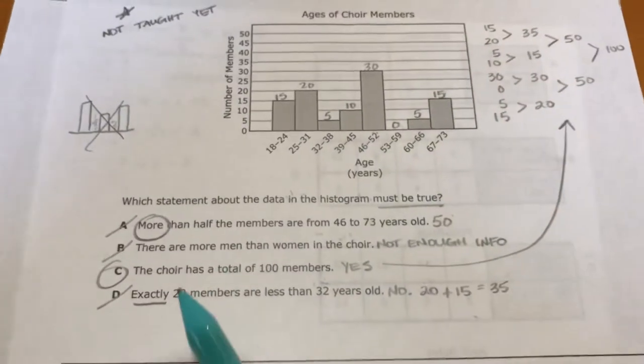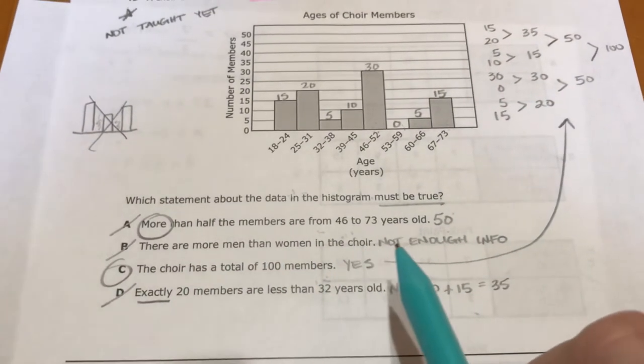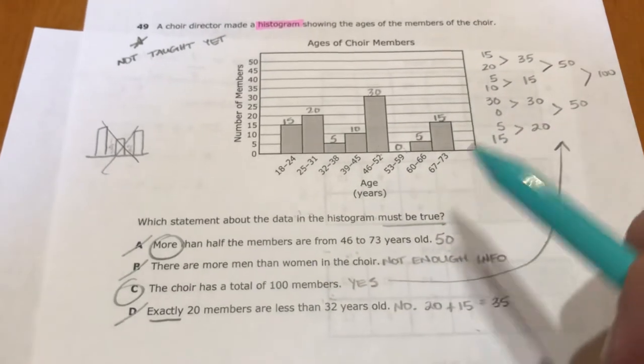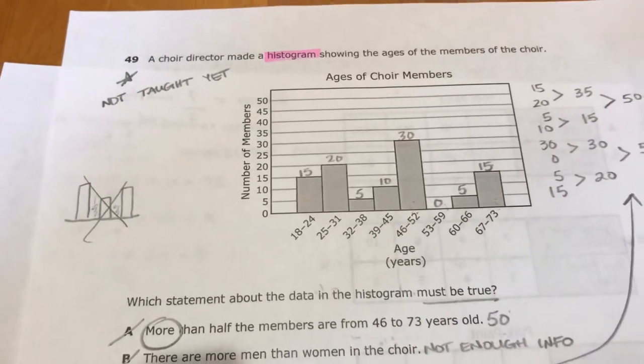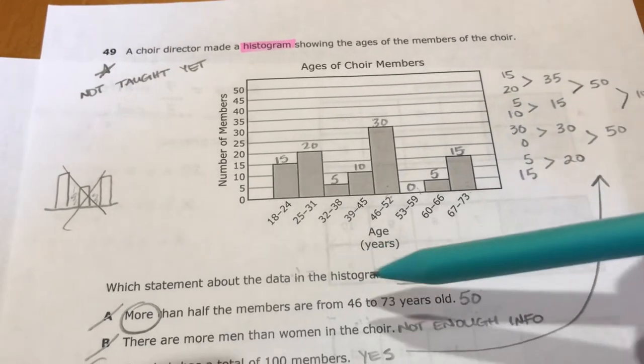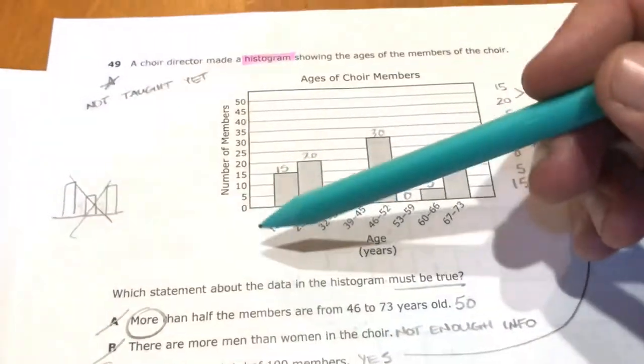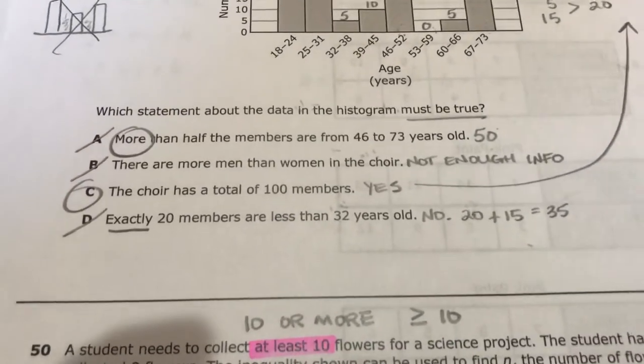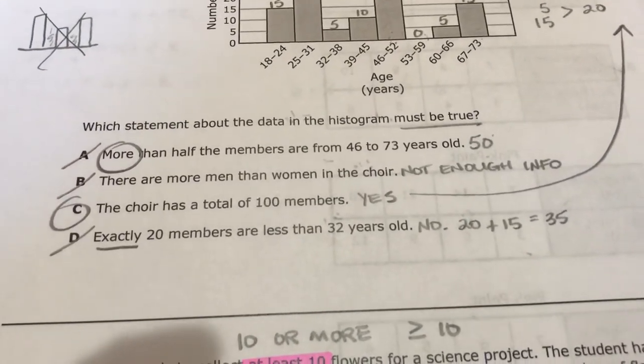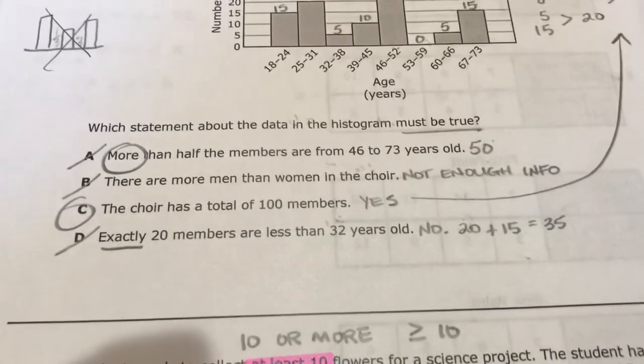It just says their ages and the number of them. You don't know, you can't answer that part. You don't know how many you have that are men or how many you have that are women. The choir has a total of 100 members. Yeah, we know that because we already did it up here, we added them all together and got 100. That's what we want.